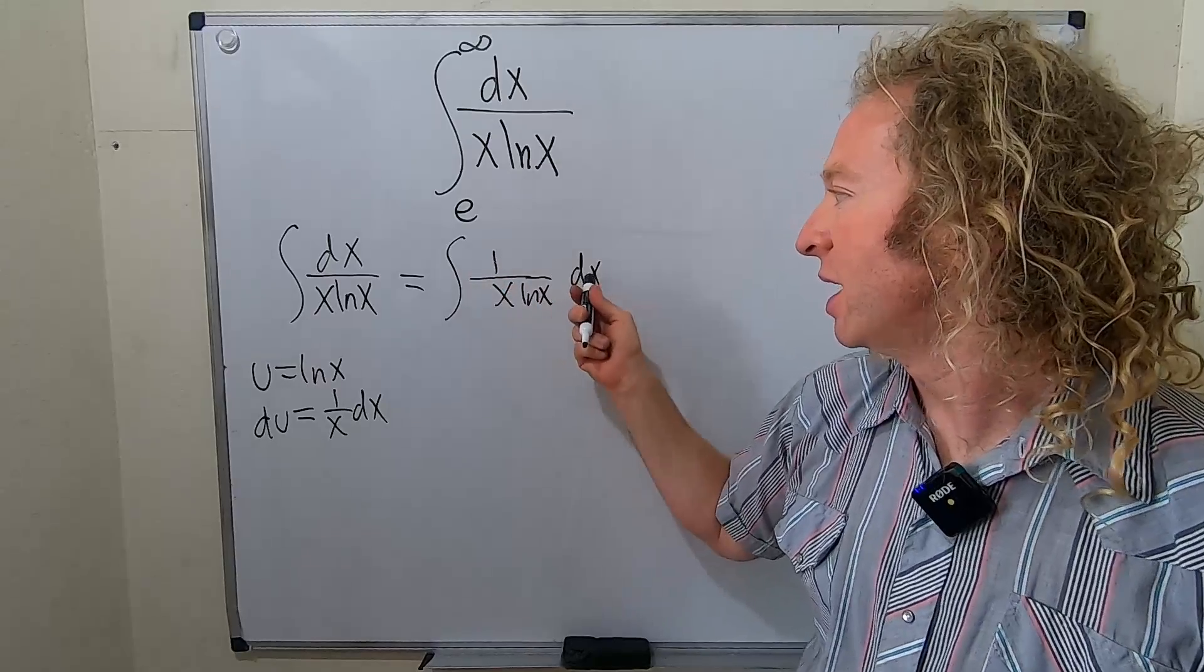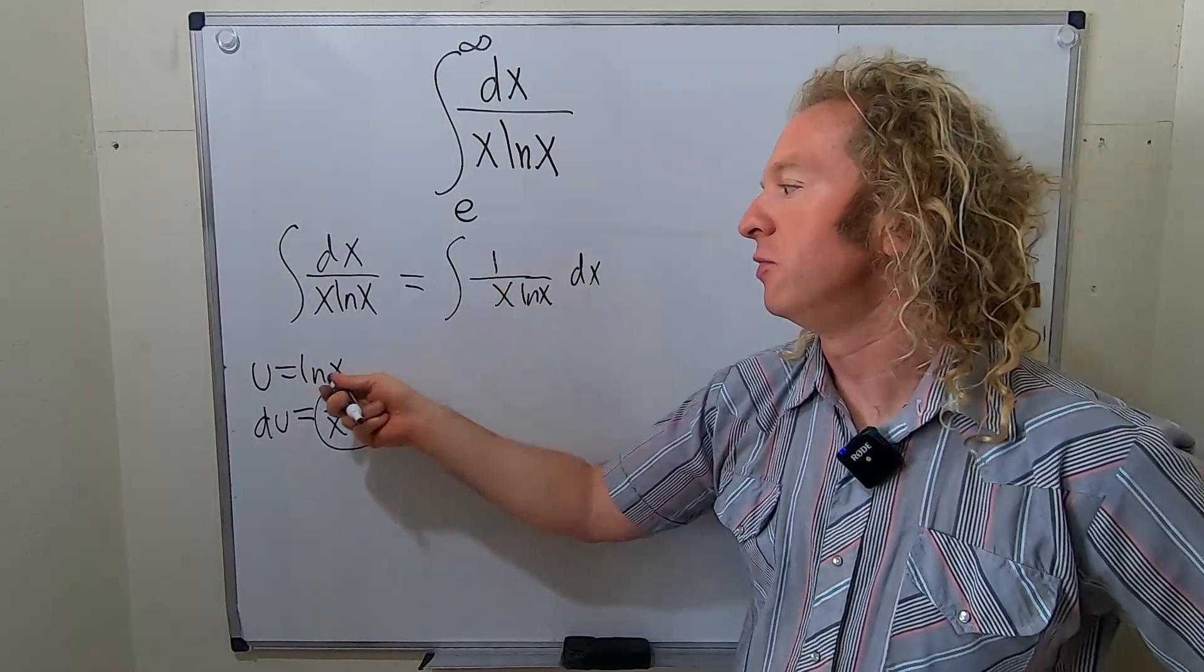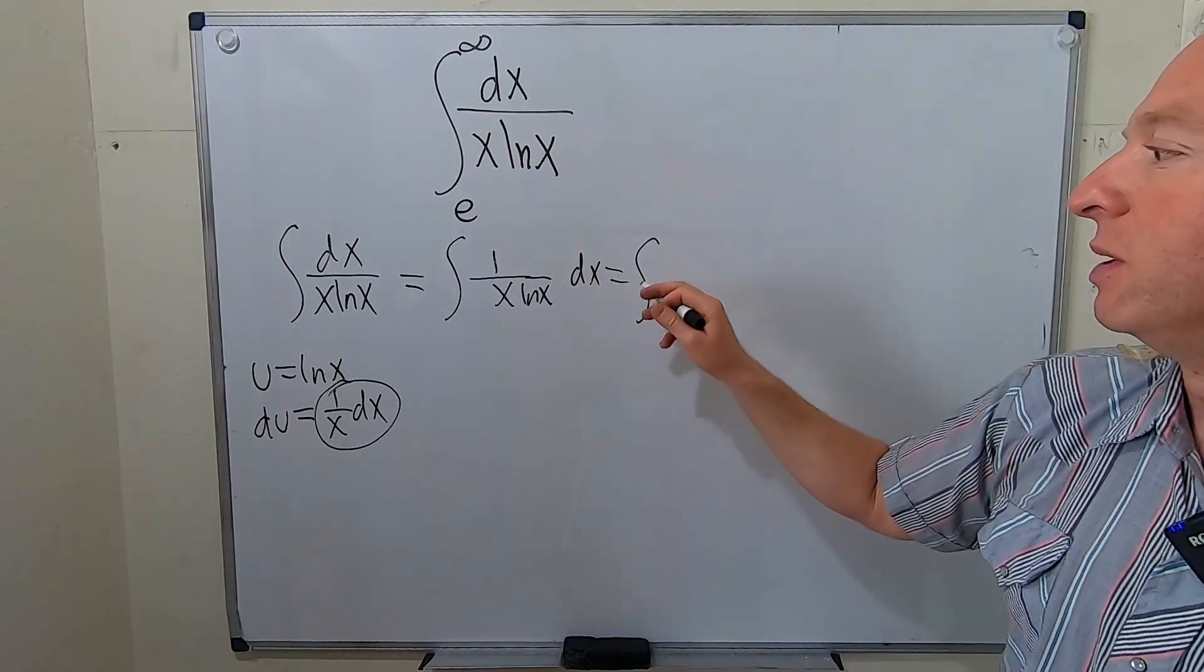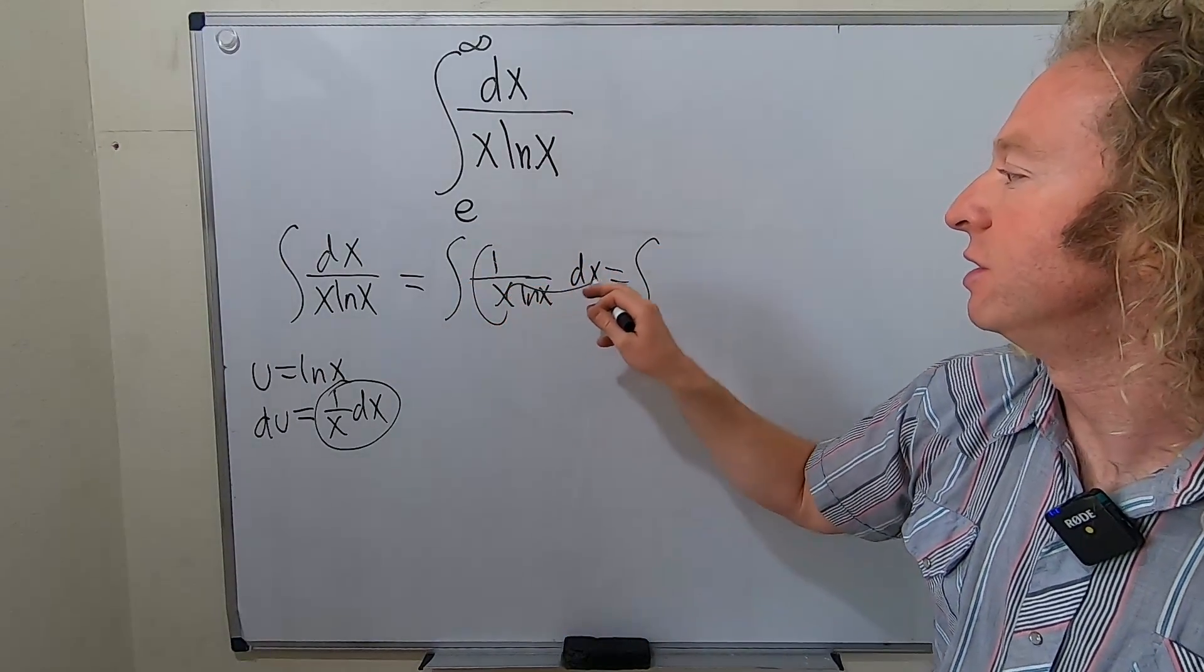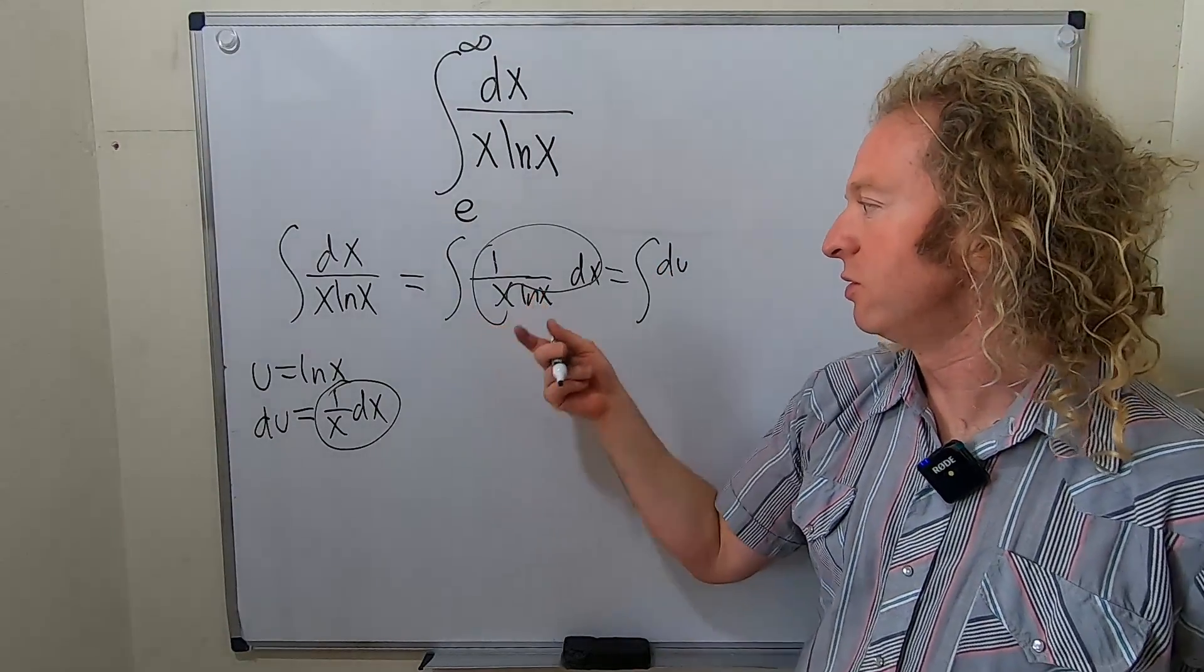So your 1 over x dx, that's your du. And then your u is the ln, so that will be this piece here is your du. I've only replaced the du at this point, du, and then you have your u.